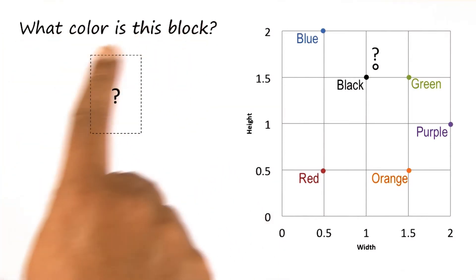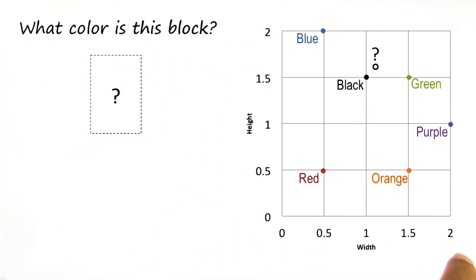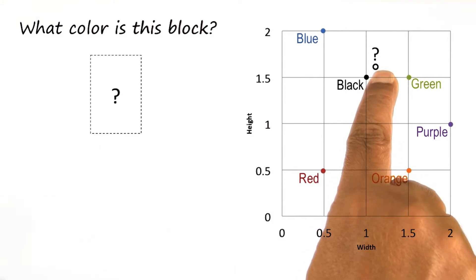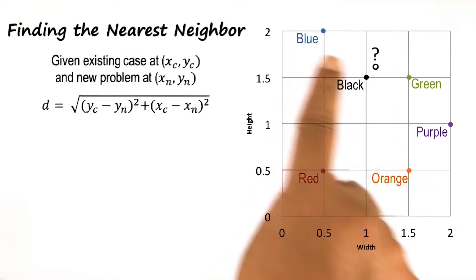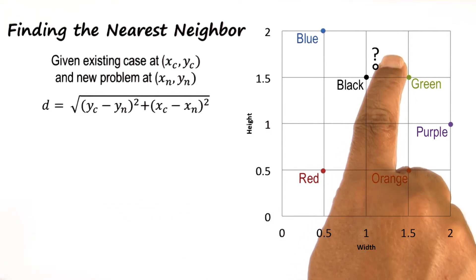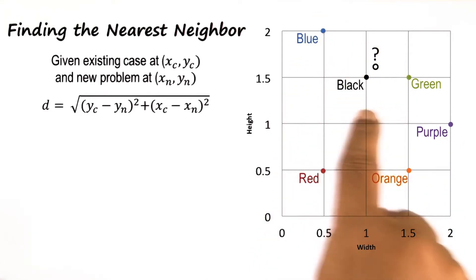So when that new problem comes along, we may represent it on the same two-dimensional grid. In this particular case, the new problem may be represented at this particular dot. Now given all the cases and the new problem, we may calculate the distance between the new problem to each of the previous known cases.